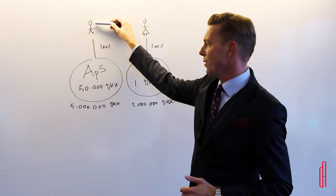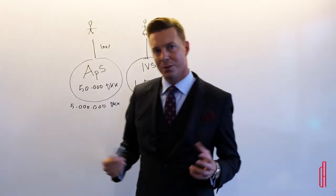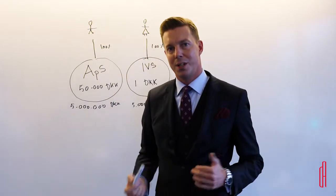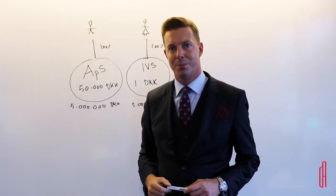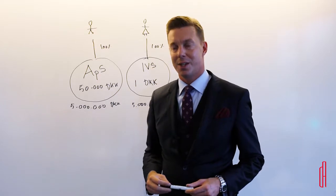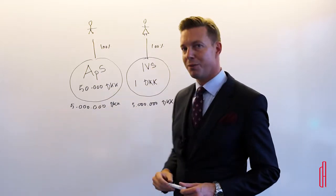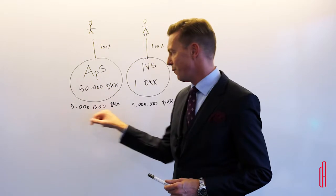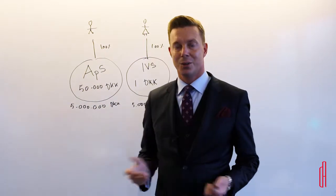And here it's important to keep in mind that the shareholder has two main ways to get the money out. One is to get a payslip. If he gets a payslip, he will have to pay the normal personal tax. The taxation here would be much more than 50% if you took out five million.